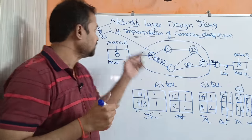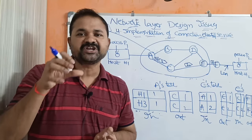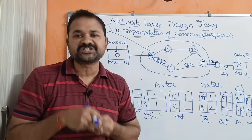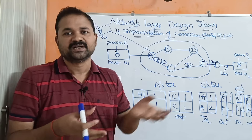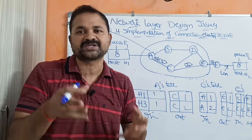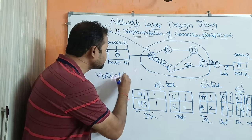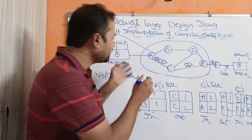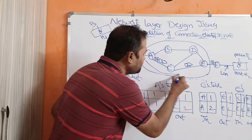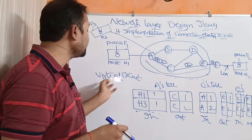Now let us see about the fourth design issue — implementation of connection-oriented service. Connection-oriented means there should be a connection between the source host and the destination host. Before transmitting the packets, that connection is set up. After the connection is set up, the source host transmits the packets via that path only. That connection is called a virtual circuit.